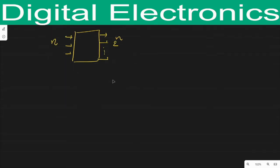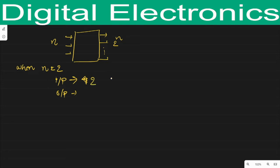On the basis of number of inputs there are various types of decoders. When we consider n equals to 2, at that time there are 2 inputs and the outputs will be 2 raised to power n, that is 4 outputs. So in decoders when n equals to 2, input equals to 2 and output equals to 4. Here I am designing a decoder circuit.